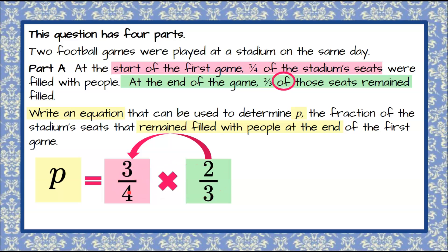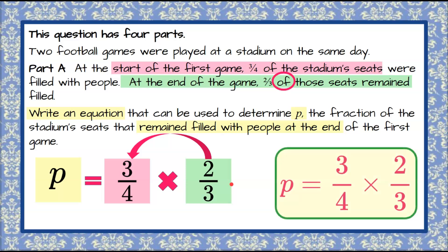So three-fourths multiplied by two-thirds is the same as two-thirds multiplied by three-fourths — when we multiply, order does not matter. So our equation, the answer to Part A, is P equals three-fourths multiplied by two-thirds. I would also note that if you said this expression was equal to P, that would also be correct. The equal sign can be on the right of the expression rather than the left.